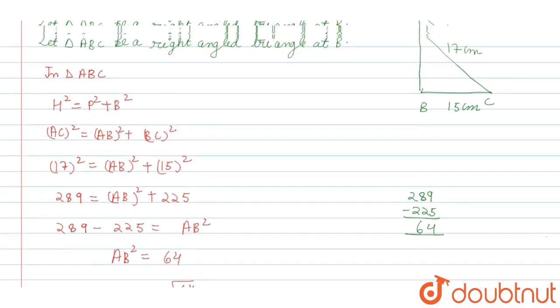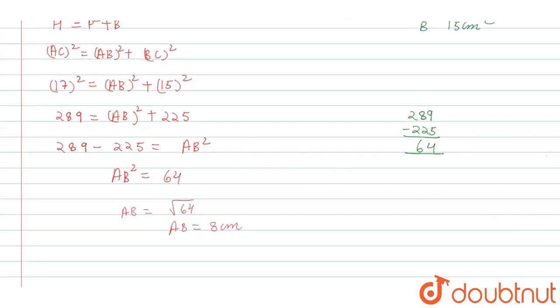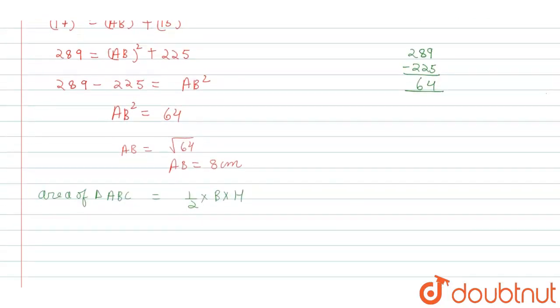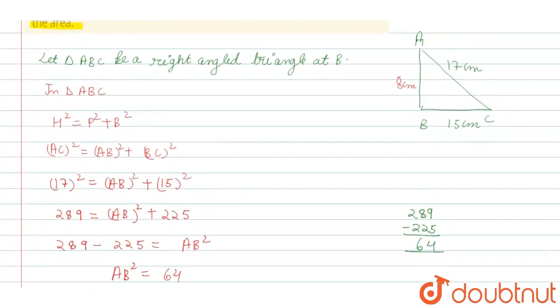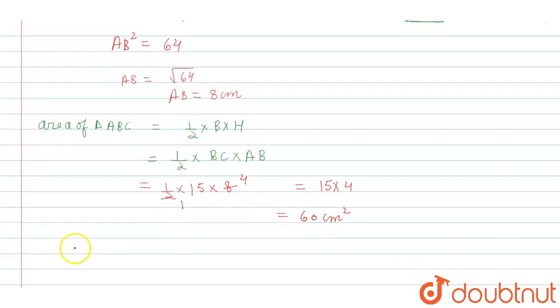Now AB equals root 64, so AB equals 8 centimeters. So from here we have calculated the AB which is 8 centimeters. Now area of triangle ABC will be equals to half into base into height. So here base is BC and height is AB, so we can write equals half into BC is 15 centimeters, AB is 8. So 15 into 4 equals 60 cm².